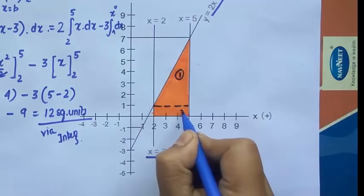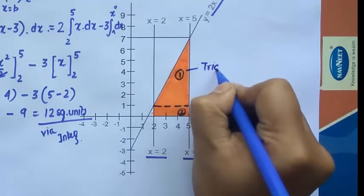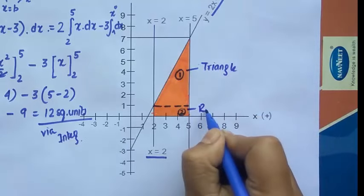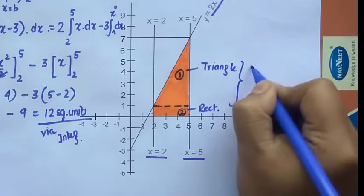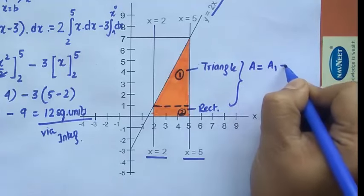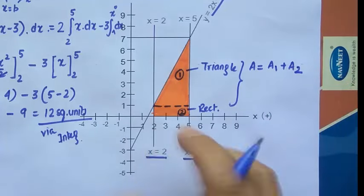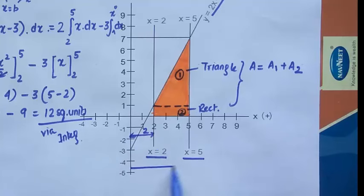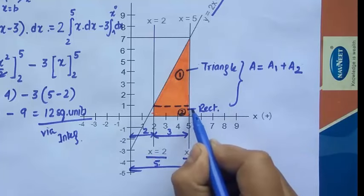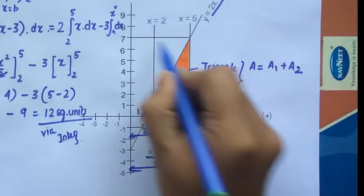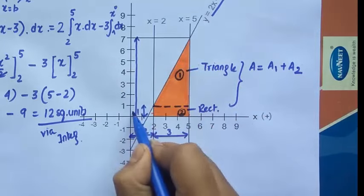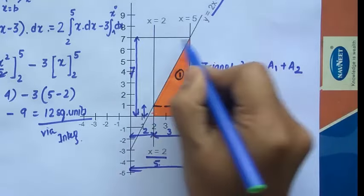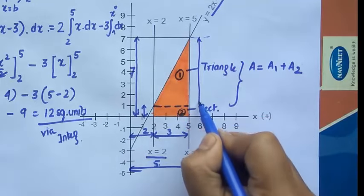Now let's verify using basic geometry. The bounded region can be split into two shapes: figure 1 is a triangle and figure 2 is a rectangle. The base spans from x equals 2 to x equals 5, so the base length is 3. For the triangle, the height works out as 6 (from y equals 1 to y equals 7).